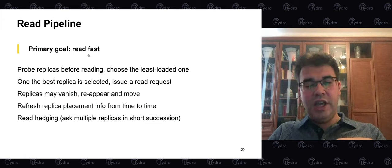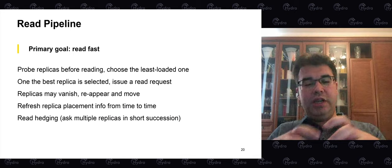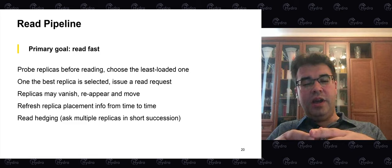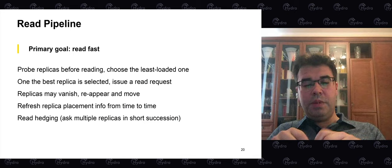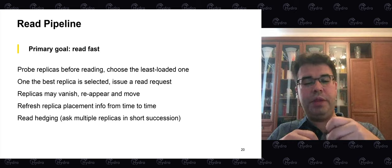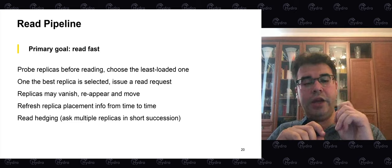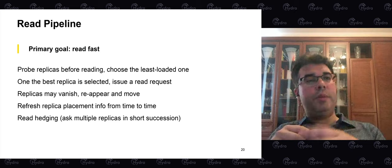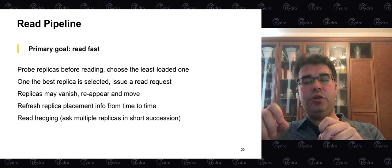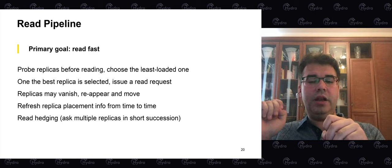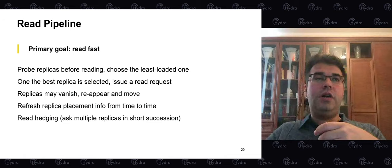For the read pipeline, the primary goal is fast reads. With three replicas, the reader first probes replicas to find the least loaded one, then requests data from it. Readers must also tolerate replica movement in the background and re-fetch placement metadata when found out of date. For really latency-sensitive applications, read hedging is available: ask the least-loaded replica first, wait for the expected response time, then also ask the second replica, and take whichever result comes first.